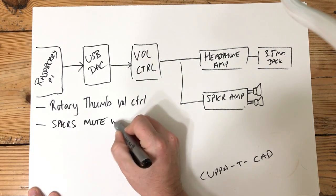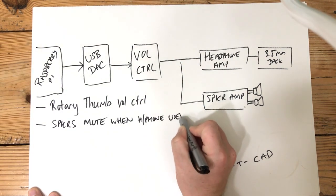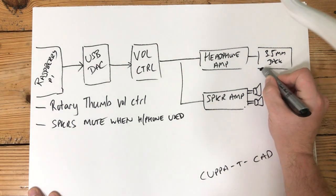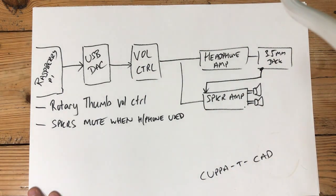Speakers mute when headphone used. So in other words, we need some kind of connection from here that comes to here that tells the speaker amplifier to shut up when somebody inserts headphones.